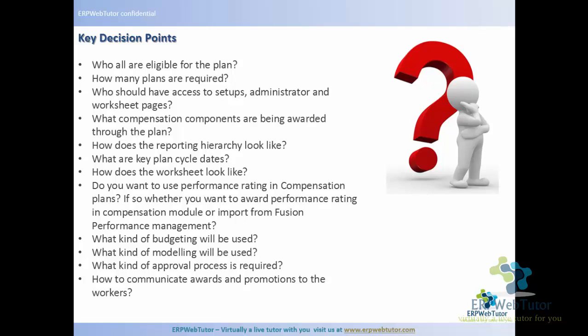Other decision points include: what compensation components are being awarded — salary increase, bonuses, stock options; how the reporting hierarchy looks — whether it's a normal employee-supervisor hierarchy or a different kind; and what the key plan cycle dates are. When does the plan cycle start — if yearly, it might run January 1st through December 31st. When do you allow managers to have access to the worksheet, and what is the cutoff date for an employee to be eligible? These questions drive your key plan cycle dates.